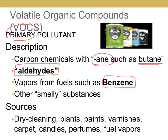Benzene is another common VOC. Gasoline and other fuels can release benzene into the air, which is bad. Things that are very smelly and have a lot of odor are considered VOCs, including artificial scents like scented candles — if they're made with artificial fragrances, that is considered a VOC. It's not as bad as benzene or aldehydes or butane, but artificial fragrances can lower the immune system. There are also natural VOCs — smelly plants like eucalyptus are natural VOCs, but plant VOCs don't really hurt us.